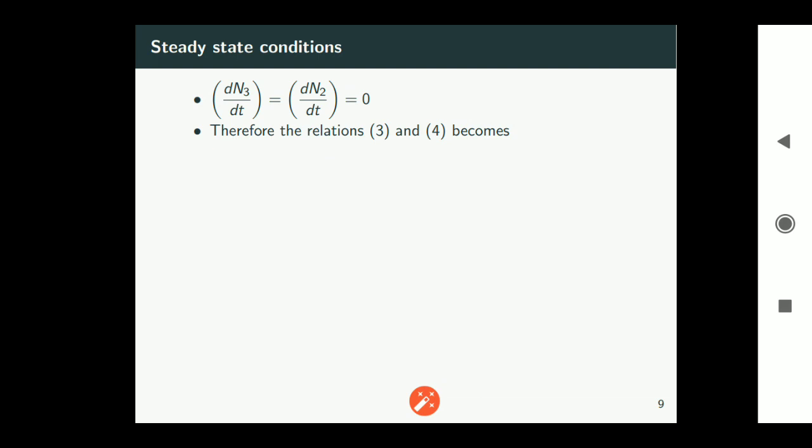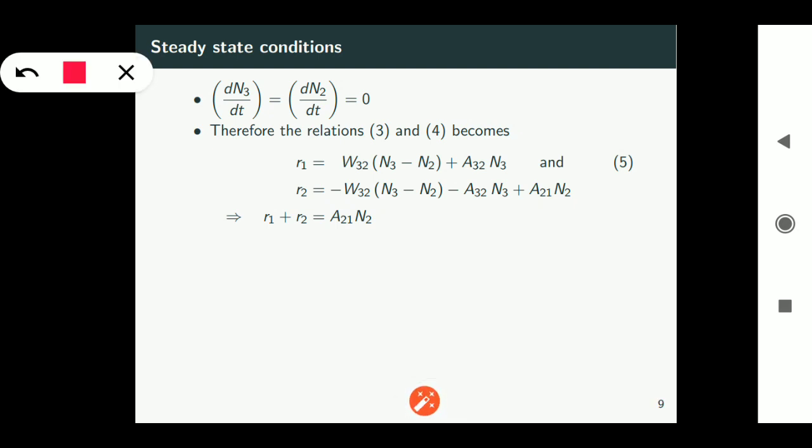So corresponding equations 3 and 4 becomes r1 equals w32*(n3 minus n2) plus a32*n3, and r2 equals minus w32*(n3 minus n2) minus a32*n3 plus a21*n2. Basically writing rate equations under steady state condition and solving for r1 and r2 we get equation 5 and next equation. If you add these two equations note that this one and this one will get cancelled because they carry opposite signs.